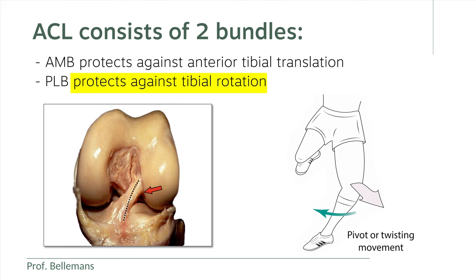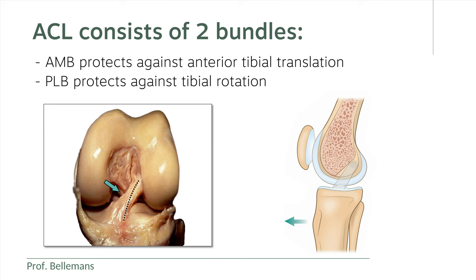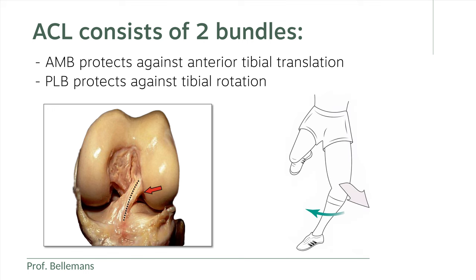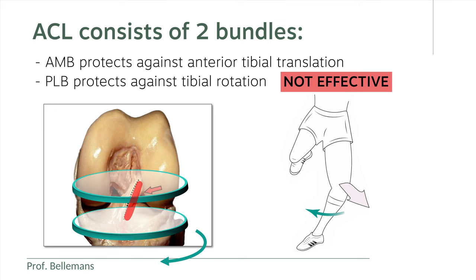For example, when an athlete suddenly changes direction while running. The anteromedial bundle is quite effective at protecting against anterior tibial translation because it is in the ideal biomechanical location and its fibers are oriented in the right direction. The posterolateral bundle, however, which protects against tibial rotation, is not so effective. Its fiber orientation is correct, but its location is far from ideal because it is in the center of the knee, so it can never be a very effective protector against rotation. An effectively protecting ligament against rotation would need to be located at the periphery of the joint.